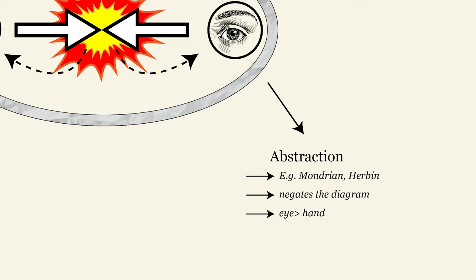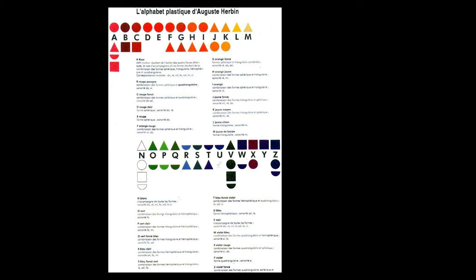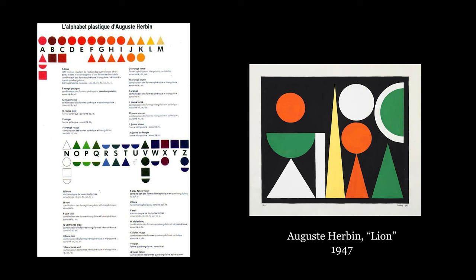A now all-powerful eye will exercise its tyrannical domination by coding the chaos. What abstract painting elaborates is less a diagram than a symbolic code, based on great formal oppositions. It replaced the diagram with a code. This code is digital — not in the sense of the manual, but in the sense of a figure that counts. Digits are the units that group together visually the terms in opposition. In abstract painting, the code can be made explicit, as is the case with Auguste Herbin's plastic alphabet, where letters are associated with certain shapes and sounds.